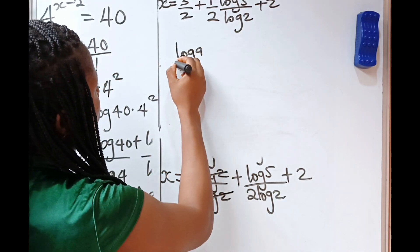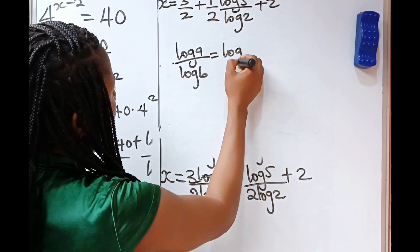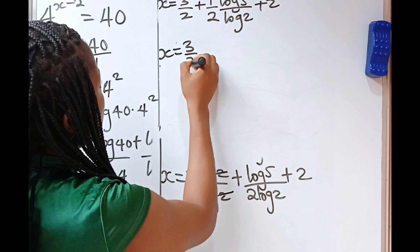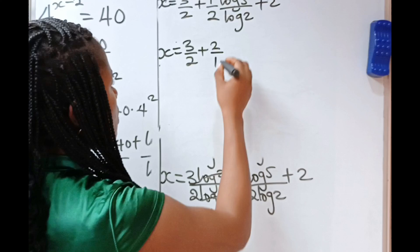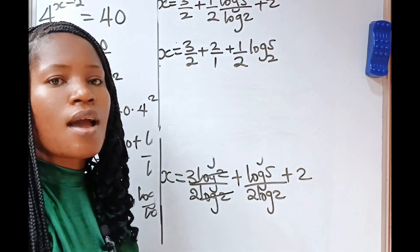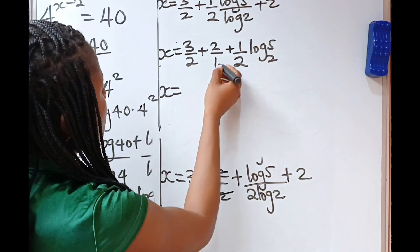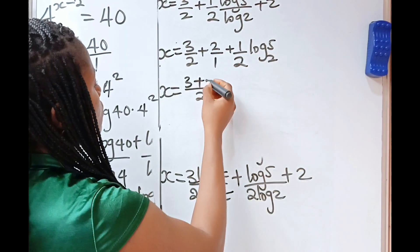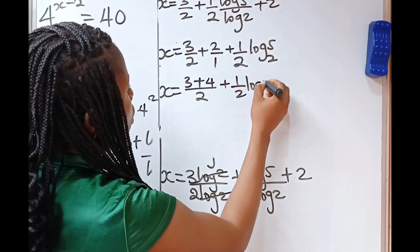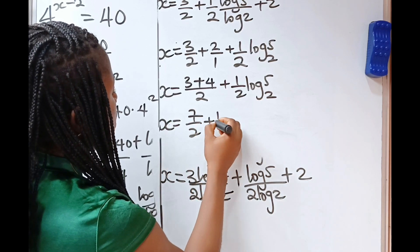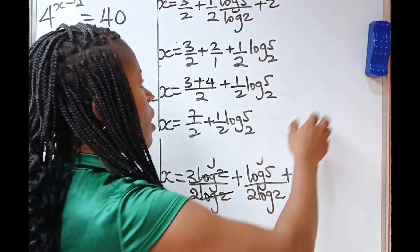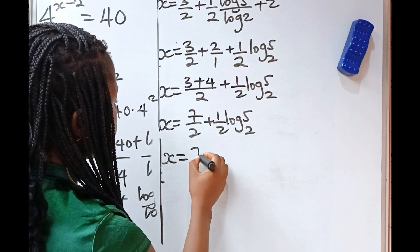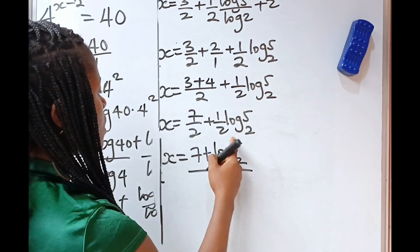Now, when you have log A over log B, it's equal to log A base B. So that means we can write this as x is equal to 3 over 2 plus 2 over 1, plus half log 5 base 2. Since 3 over 2 and 2 share the same denominator of 2, we can write this as x is equal to 7 plus log 5 base 2, all divided by 2. They share the same denominator.